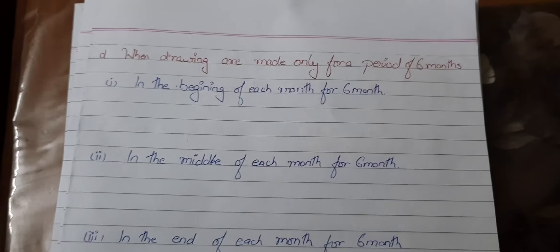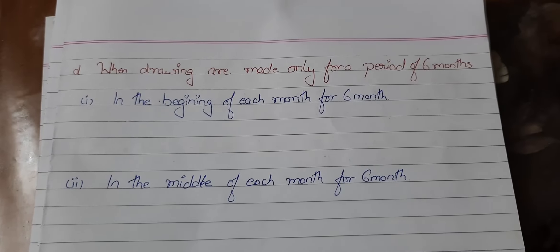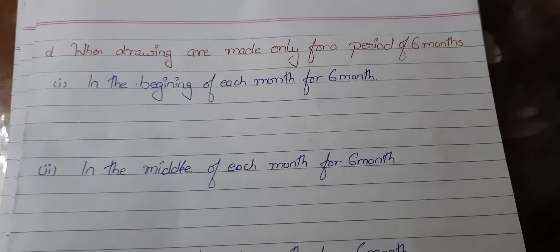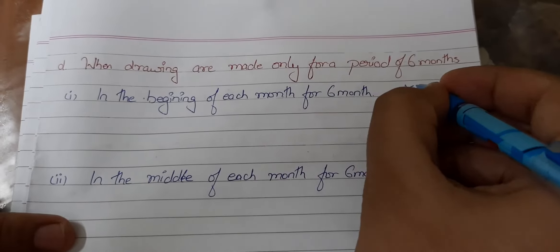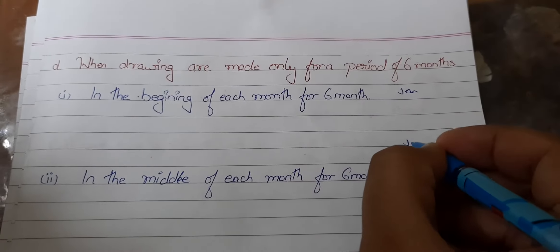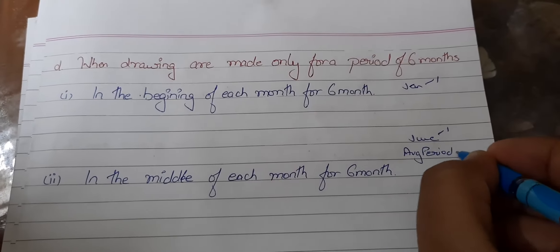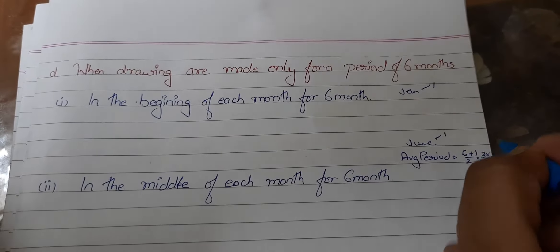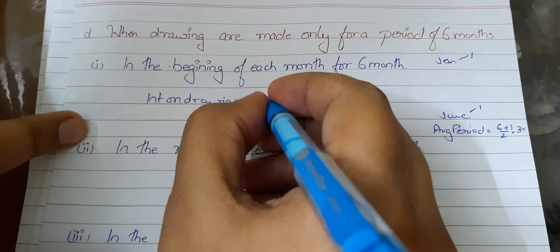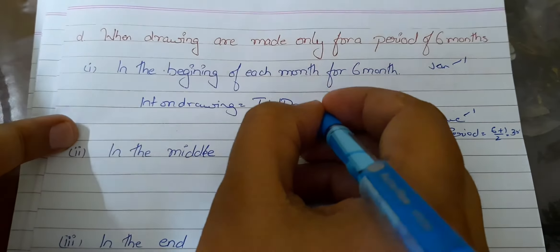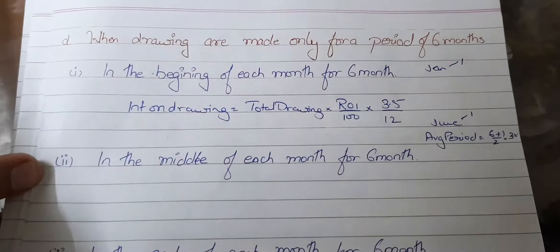Now case 4d: when drawings are made only for a period of six months. For the beginning of each month, January 1st to June 1st - 6 months are left after the first transaction and 1 month after the last. So the average period is 6 plus 1 divided by 2 equals 3.5. Formula: interest on drawing equals total drawing into rate of interest by 100 into 3.5 by 12.